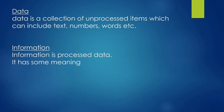What is the definition of data? Data is a collection of unprocessed items which can include text, numbers, words, etc. In the example of adding two numbers, suppose 2 and 3 — in that case, data is numbers because 2 and 3 are the numbers.